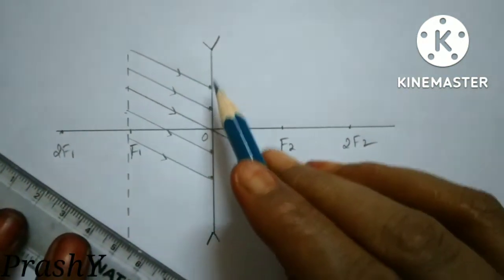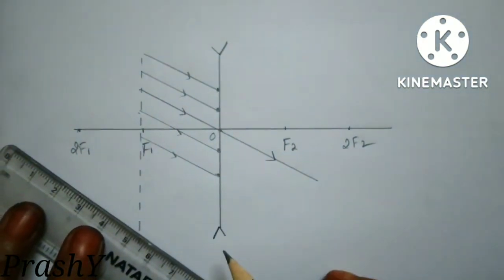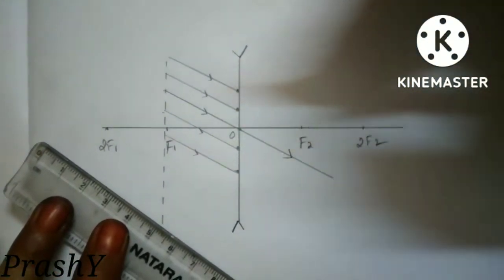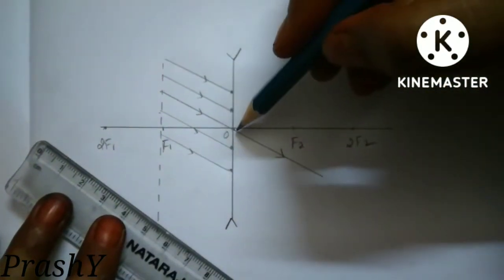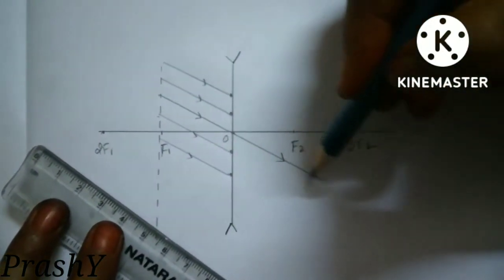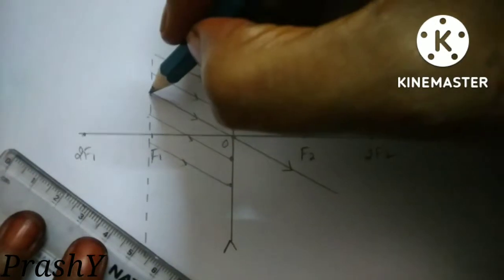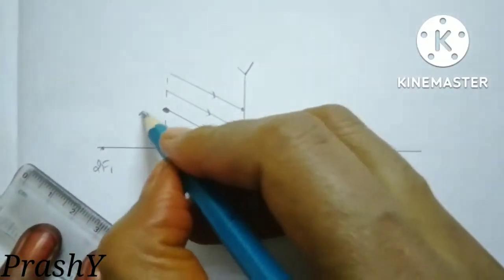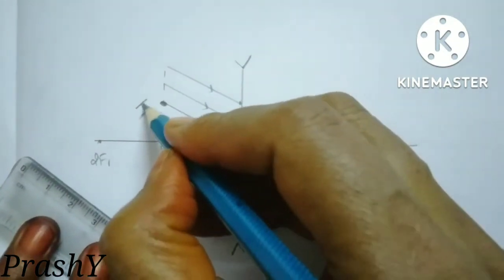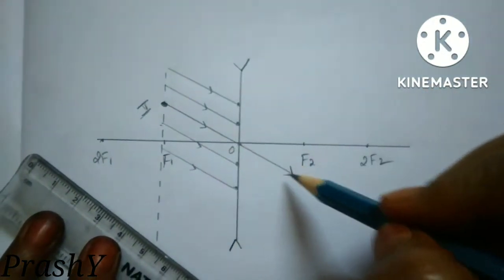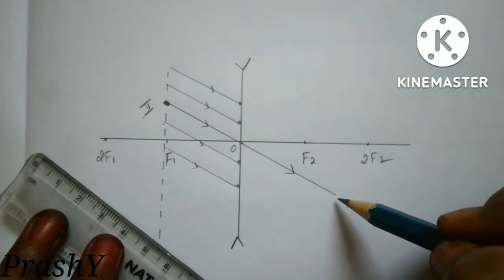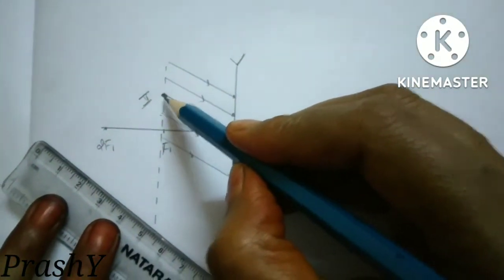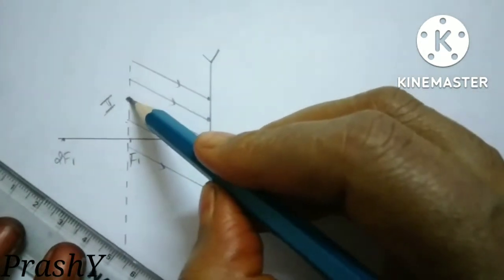This is a concave lens, which is a diverging lens, so the rays will diverge. The line passing through the optic center meets the focal plane at point I. All the rays should meet at this point on the focal plane. So I have to join this point and the points of incidence of the incident rays.